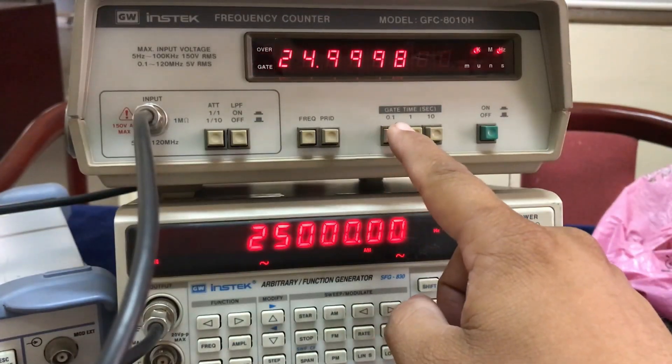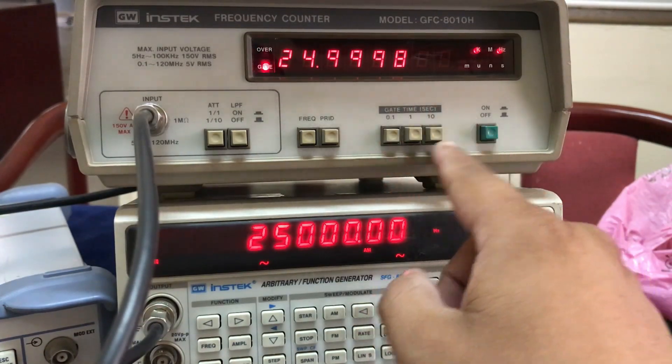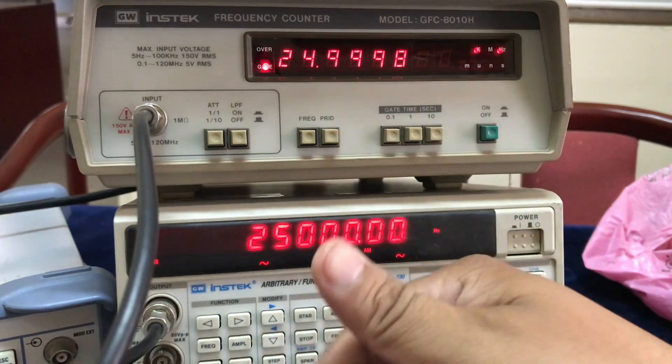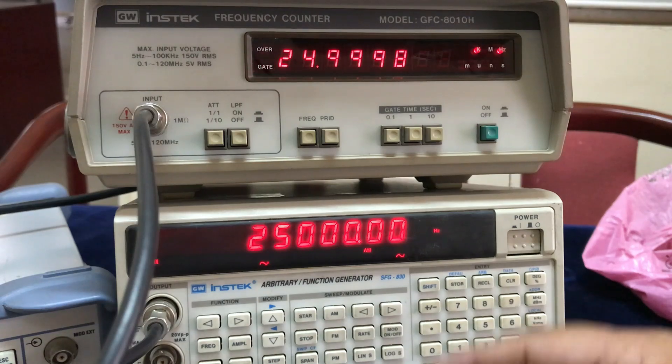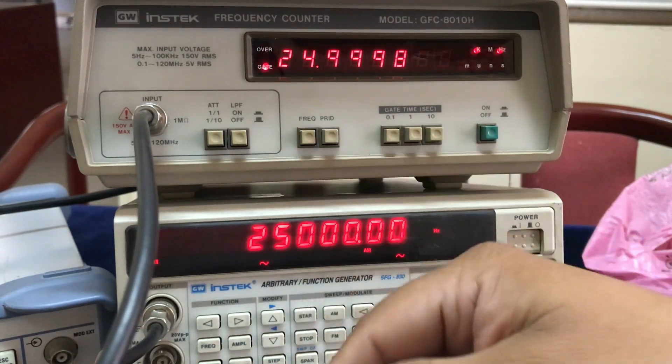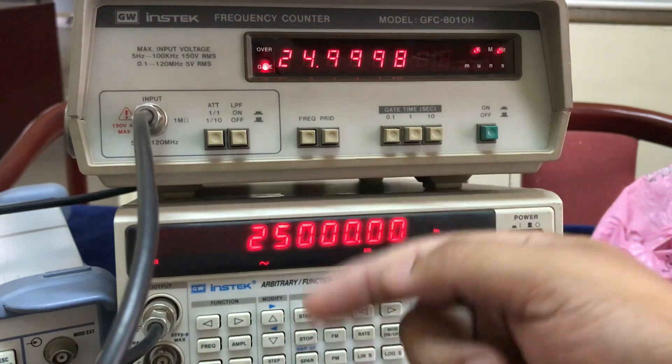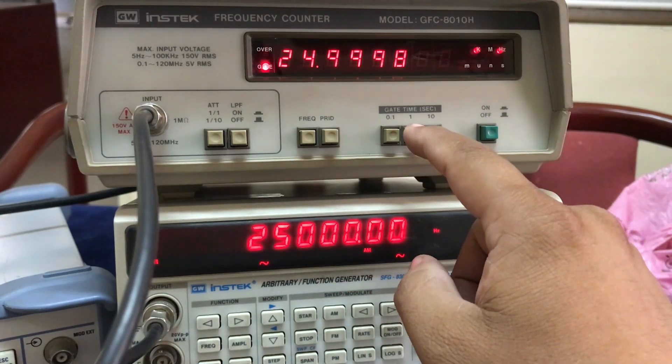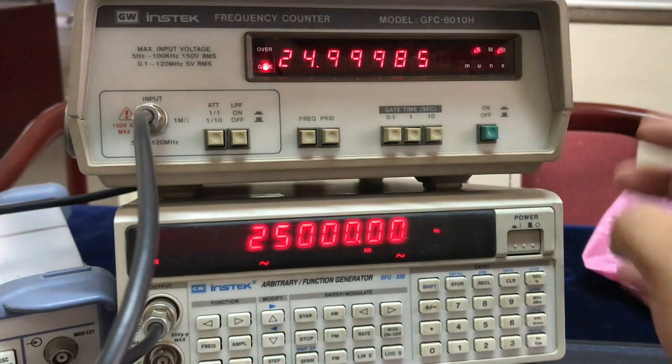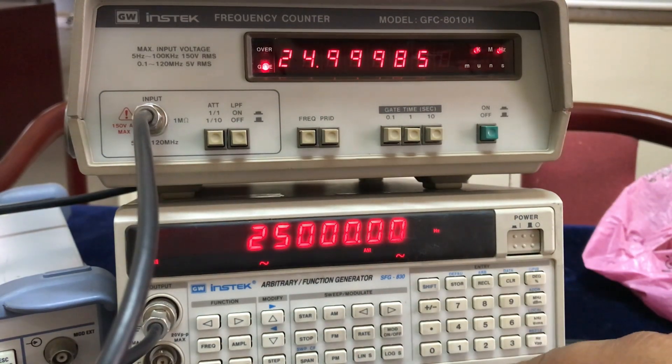A couple of things that you need to know regarding frequency counter: you have something called gate time. Gate time is how frequently this is going to update. If you have a gate time of 0.1, the counting is being done every 0.1 second. If you have one second, the update is about one second.